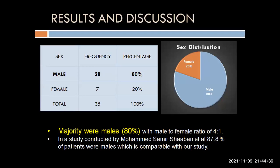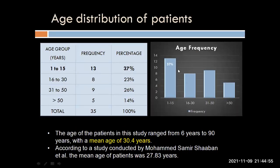Coming to the results of the study, you can see from this pie chart that the majority of the affected populations were males — around 80% of those affected were males. This is in keeping with the fact that road traffic accidents or blunt trauma to abdomen is much more common in the male population. When we look at the age distribution, most of the patients were under the age group of 15 years, because younger adults and children are particularly at higher risk due to anatomical factors like decreased perirenal fat, weaker abdominal musculature, and a less ossified thoracic cage, all offering less protection to the kidneys.